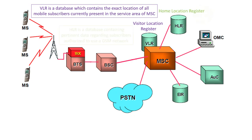Next is HLR — Home Location Register. HLR is a database containing pertinent data regarding subscribers authorized to use a GSM network. If you purchase a SIM from a specific area, your entry is marked in the database of HLR. HLR is like your home which contains all your information such as your ID proofs, which plan you are taking, which caller tune you are using, etc.